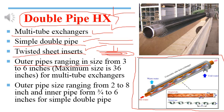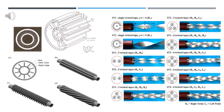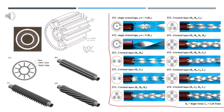Some key specifications: the outer pipe ranges from 3 to 6 inches in size, with a maximum of 36 inches for multiple tube heat exchangers. For the simple double pipe heat exchanger, the inner pipe ranges from 2 to 8 inches and the outer pipe from 3/4 to 6 inches. There are several types of twisted sheet arrangements, and the length and surface area of the twisted sheet can be calculated using formulas in textbooks, though calculations are more complex and lengthy.